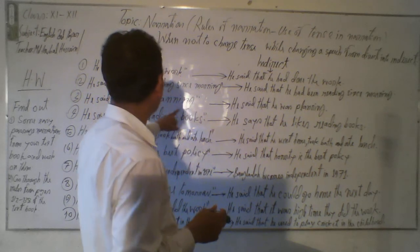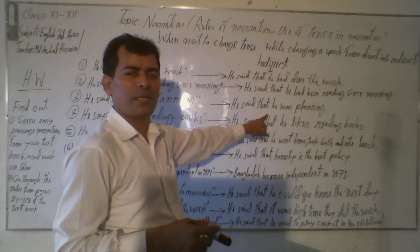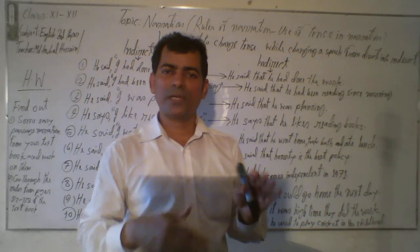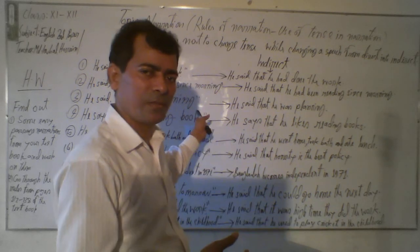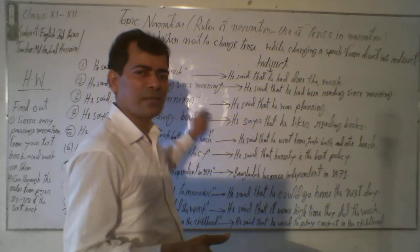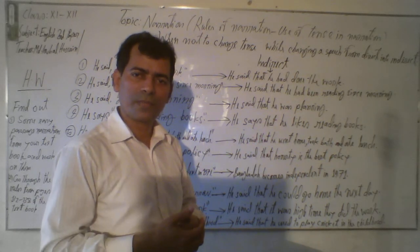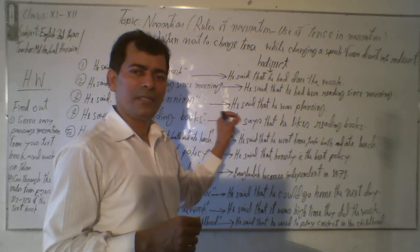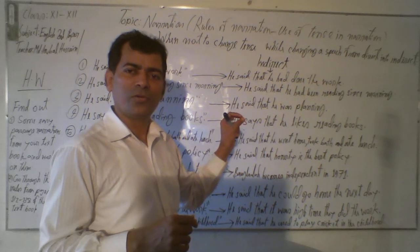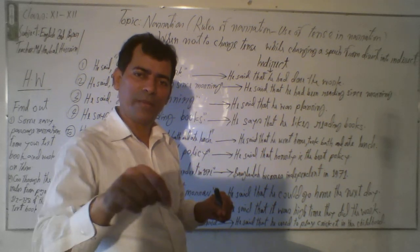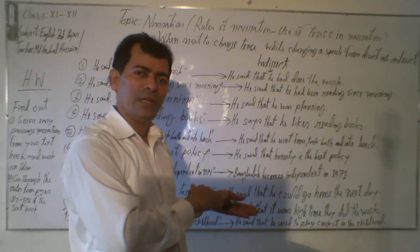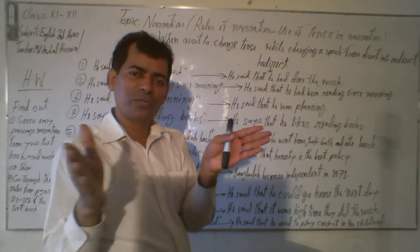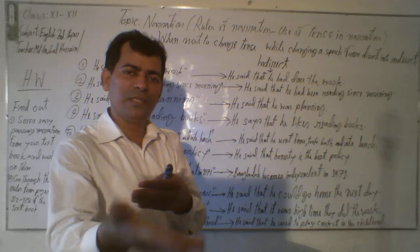Exception three: 'He said, I was planning' — in indirect narration: 'He said that he was planning.' It is past continuous tense. Generally, past continuous tense changes to past perfect continuous tense. But here, 'I was planning' doesn't refer to or indicate any completed action. However, if you say 'He said, I was planning to go to Cox's Bazar, but I changed my plan,' then 'changed my plan' refers to a completed action, so you could change the tense in that case.